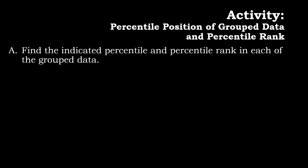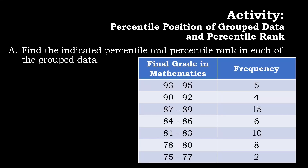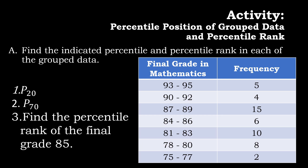Now let us have an activity called the percentile position of grouped data and percentile rank. Find the indicated percentile and percentile rank in each of the grouped data with a given table. The table shows the final grade in mathematics and the frequency. From 93 to 95 there are 5 students, 90 to 92 there are 4 students, and so on up to 75 to 77 where there are 2 students. For number one, find the 20th percentile. For number two, find the 70th percentile. And for number three, find the percentile rank of the final grade 85.